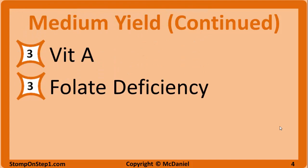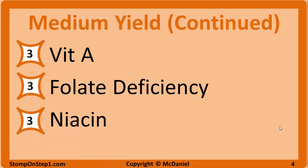Next we have folate deficiency. You want to know a little bit about its correlation with neural tube defects and how prenatal vitamins address that. The things I said you should focus on for B12 are more or less the same with folate — it's hard to study one without the other. So you want to know megaloblastic anemia, lab results, and how to differentiate between the two. Finally, we've got niacin with a high yield rating of 3. You want to know the clinical presentation for pellagra as well as how niacin is sometimes used to treat high cholesterol.